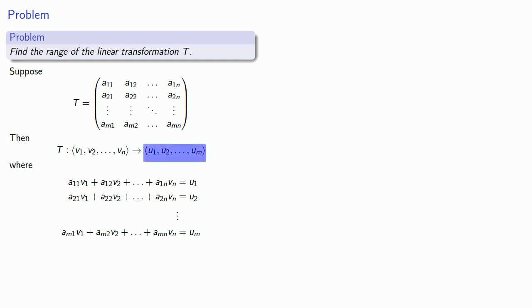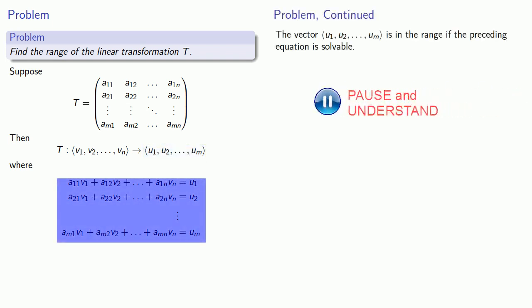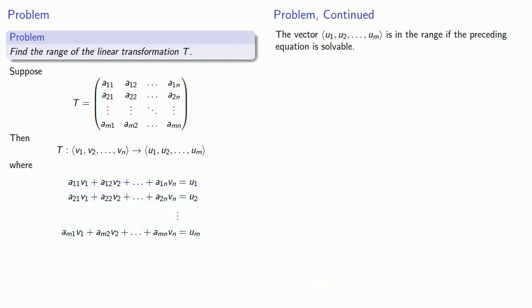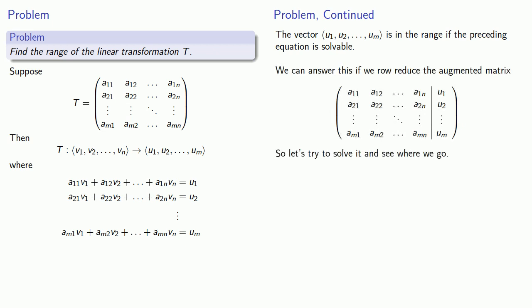So if I have a vector, it will be in the range if the system of equations is solvable. And I can answer this by row reducing the augmented coefficient matrix. Well, paper is cheap, pixels are cheaper. Let's try and solve this and see where we go.